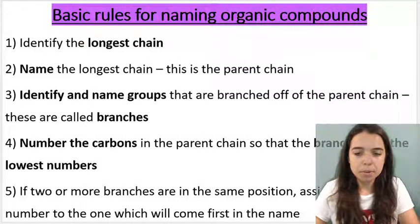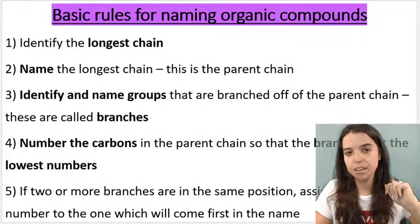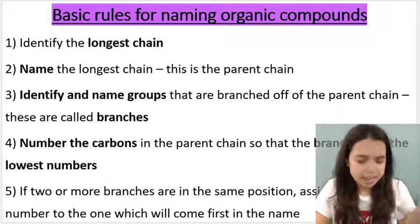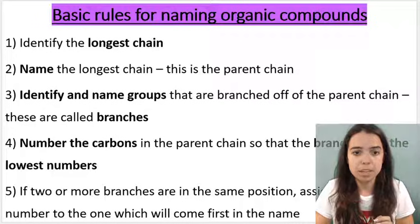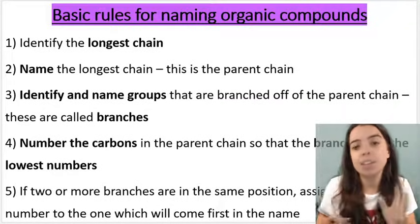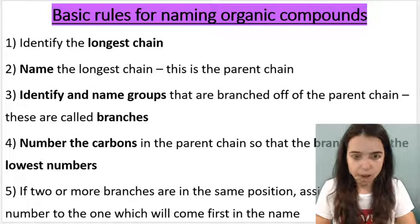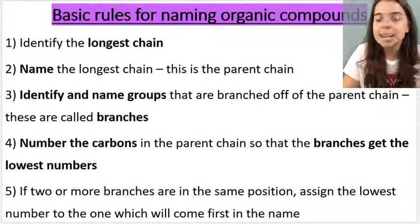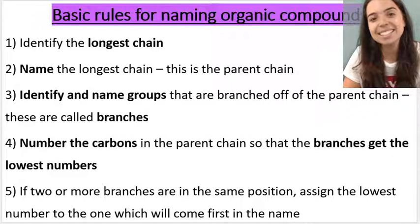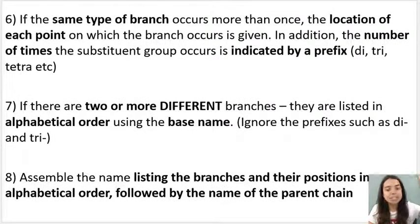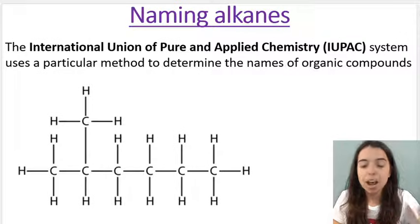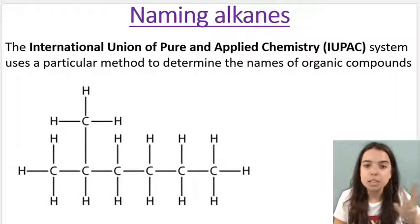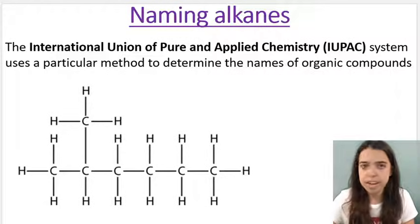Grade 12s, I'm going to show you these rules on the screen — you can take them down or screenshot them. But the best way for you to understand these rules is for me to do examples. Here are the first five rules when it comes to naming organic compounds, in this case naming alkanes, and here are rules six, seven and eight. I'm going to do an example and I want you to see how this works. Refer back to the rules as I go, but it makes so much more sense through examples.